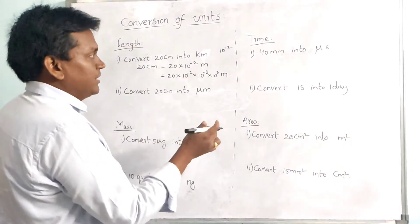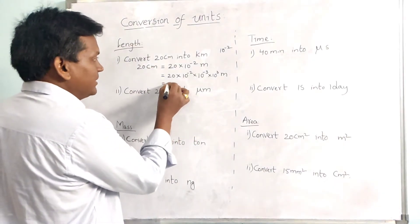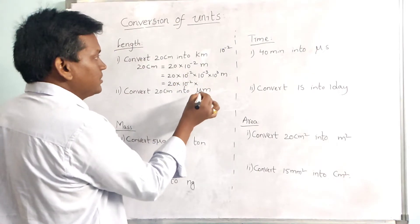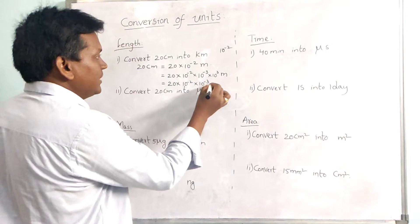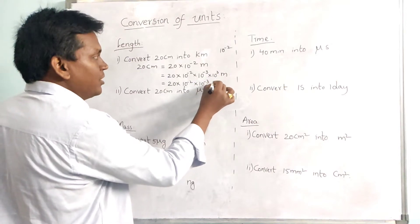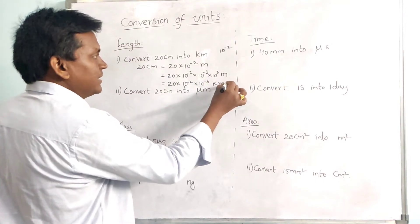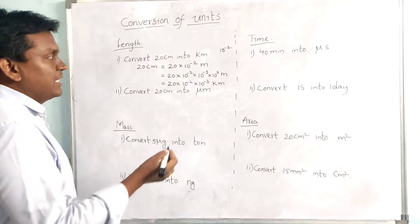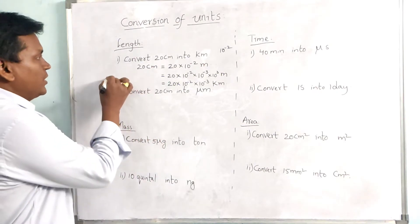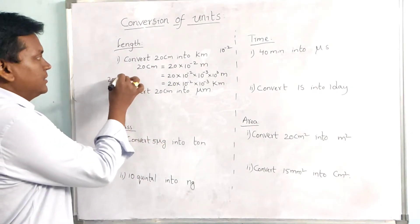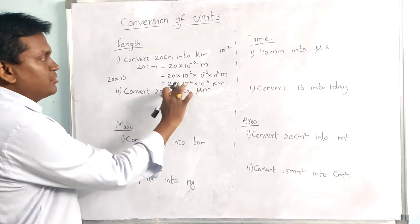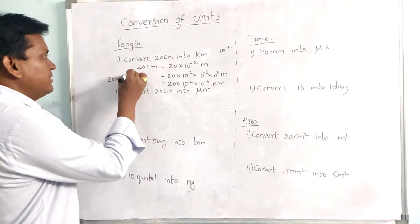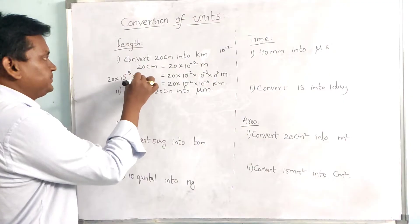So we can write this as 20 × 10⁻² × 10⁻³ kilometer. Here the bases are equal, so powers are added: minus 2 plus minus 3 gives minus 5. So 20 centimeters equals 20 × 10⁻⁵ kilometers.